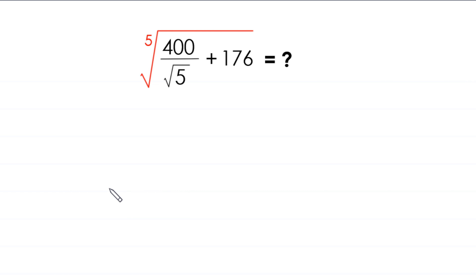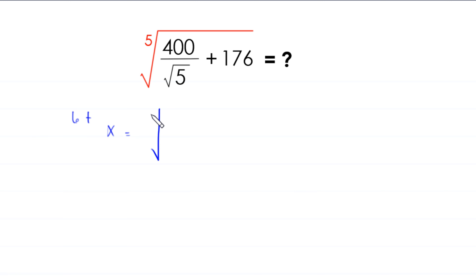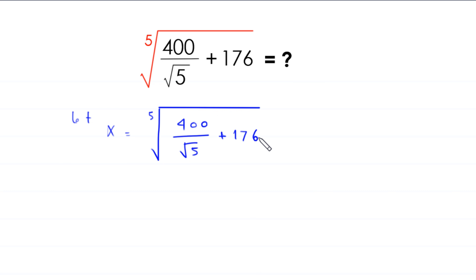Hello everyone, welcome to this problem: how to simplify this very nice radical expression — the fifth root of 400 over (root 5 plus 176). Let's start by supposing that this expression is equal to x, so x equals the fifth root of 400 divided by (root 5 plus 176).